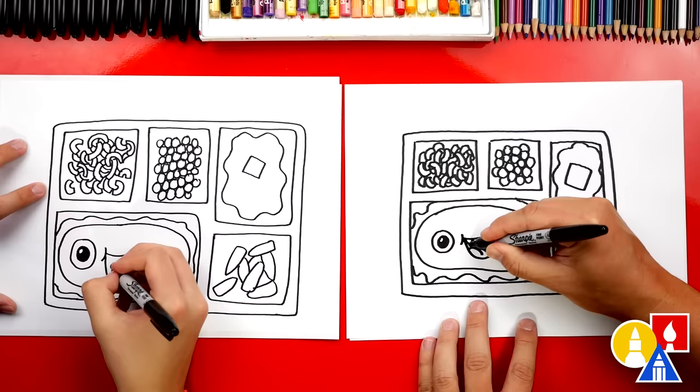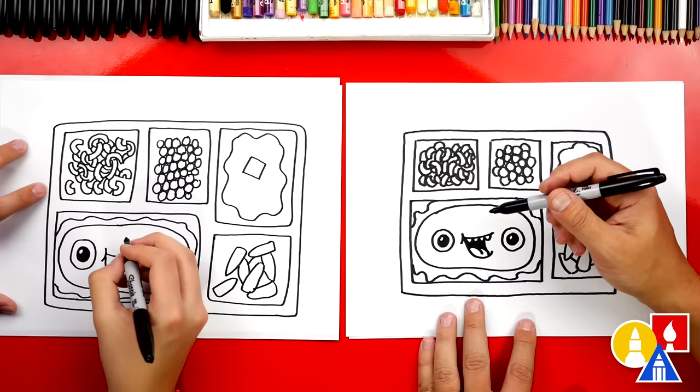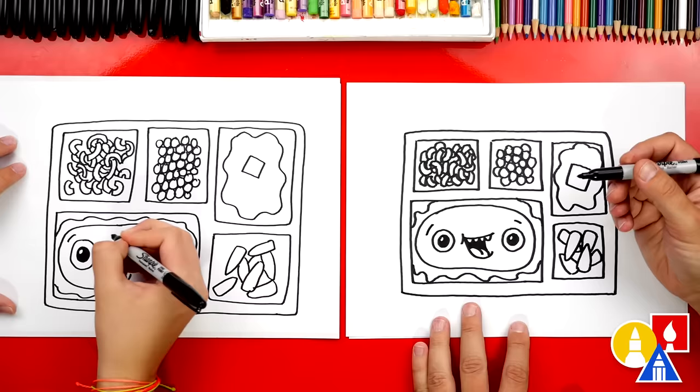You could maybe give your steak a top hat or you could turn it into a unicorn. That would be fun. It's unicorn steak. There we go. And eyebrows. Jack, we did it. We finished drawing our TV dinner. It looks awesome.